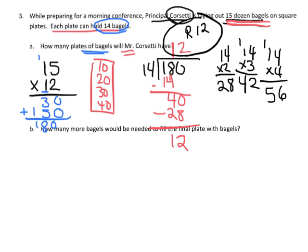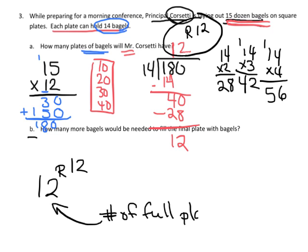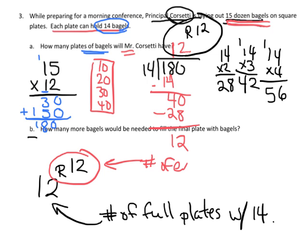Now what does that mean? Question B says how many more bagels would be needed to fill the final plate? So when we have 12 remainder 12, this 12 here means the number of full plates with 14 bagels on each plate. This remainder 12 means the number of extra bagels.